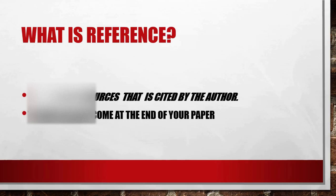Moving ahead — what is reference? A list of the sources cited by the author is known as a reference, and the references come at the end of your paper. During citation you give credit to the concerned author, but during reference you have to give further details about the author and his research article at the end of your research paper. This is known as adding reference.